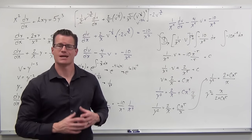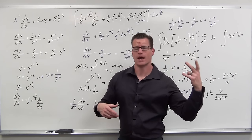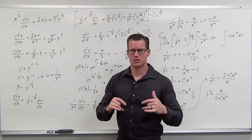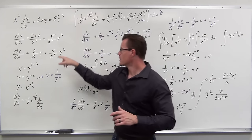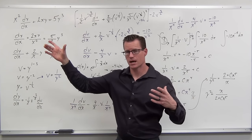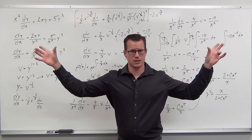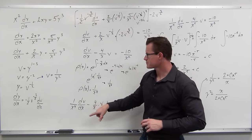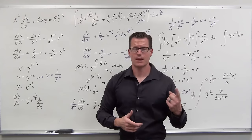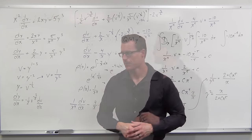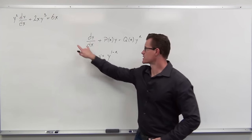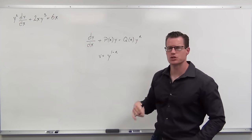That's the idea with these Bernoulli equations: we make the substitution v equals y to the one minus n. It creates something that when you undo one side, you get rid of both the v terms on left and right simultaneously, and it forces v to the first power in the middle to make it linear. We're going to try four more examples to really make this sink in.